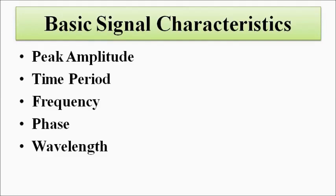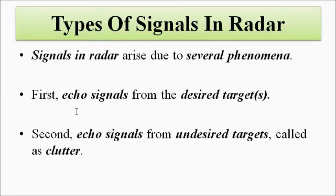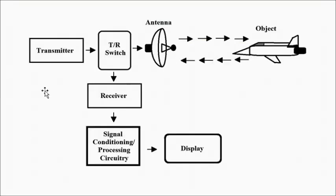When discussing signals in radar, it is important to understand what types of signals we deal with. Only then can we treat them in a desired way. Our interest is to extract the maximum amount of information from the echo signal from the target. In radar systems we deal with several kinds of signals. The most important is the echo signal — the signal re-radiated from the desired target object which we want to study.